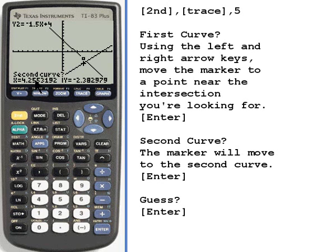When I press enter it now says second curve. I want to make sure that the marker is also still close to where I want it to be. So I'll press enter.